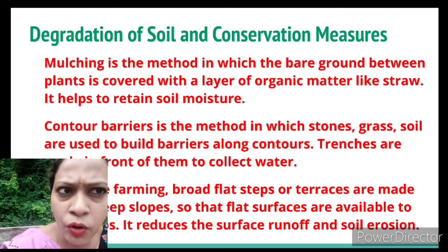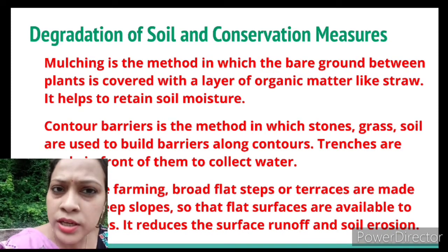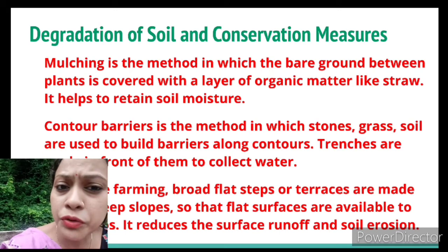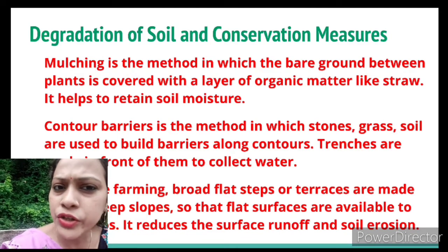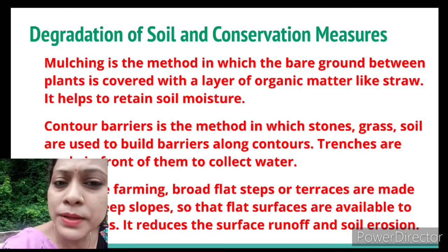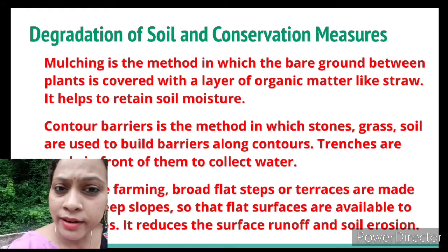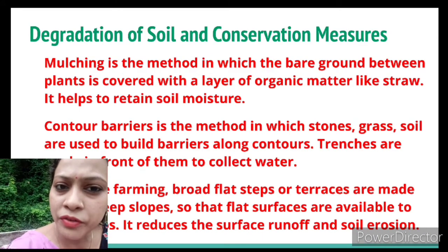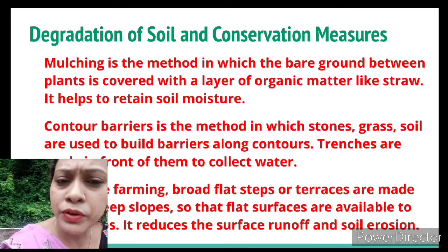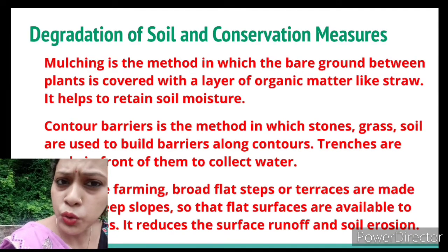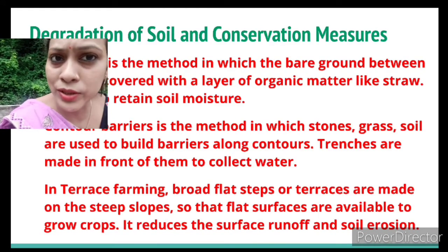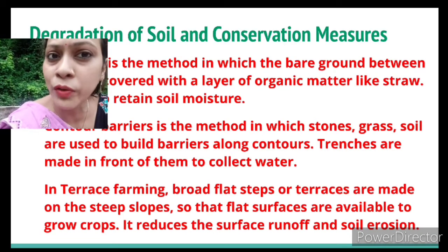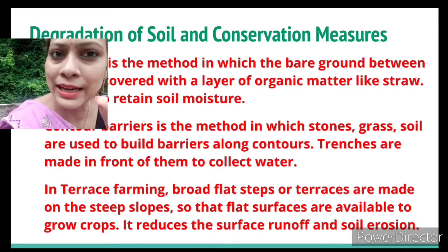Contour means areas of equal height — it is an imaginary line joining areas of equal height. Contour barriers are barriers made along these lines of equal height so that soil does not get washed out by rain water. These barriers are made up of stones, grass, and soil, and narrow channels are made so that water flows down through those channels rather than washing out the entire area.